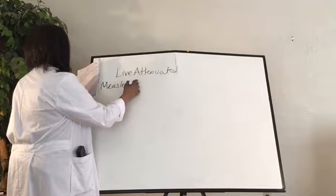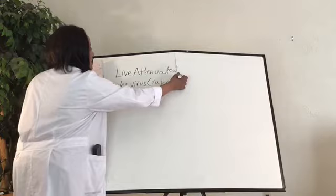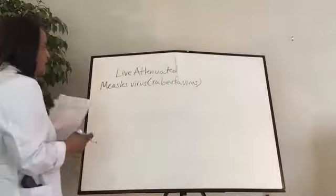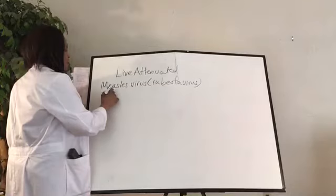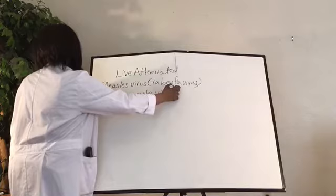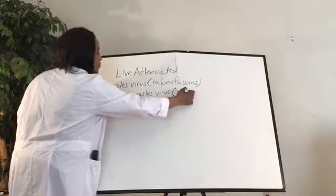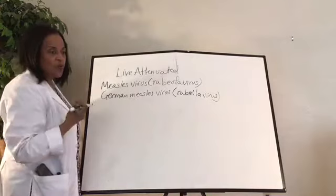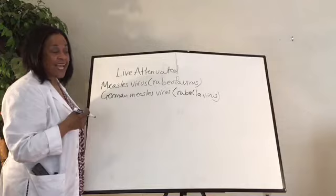Live attenuated vaccines are the weakened viruses. The measles virus, also known as rubeola, is one example — grown in chick embryo cells. German measles, called rubella virus, is another — grown in monkey kidney cells.